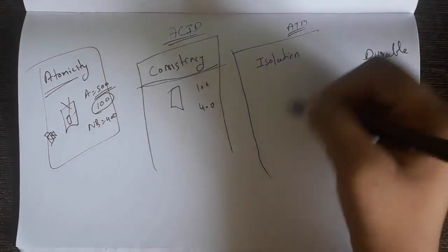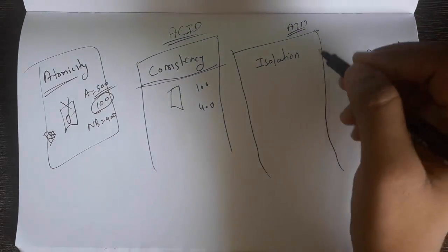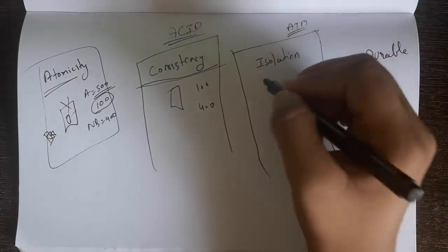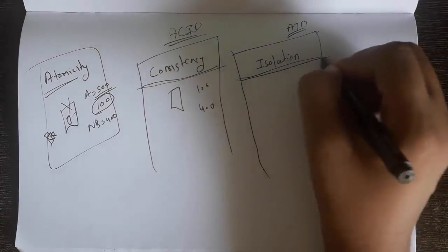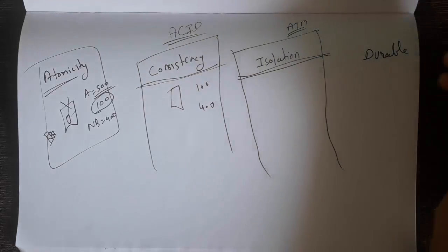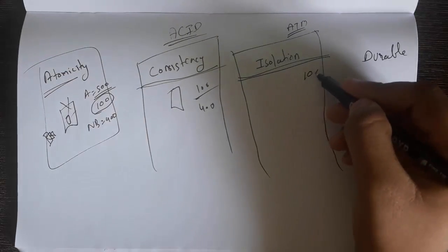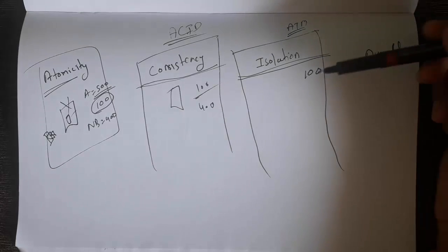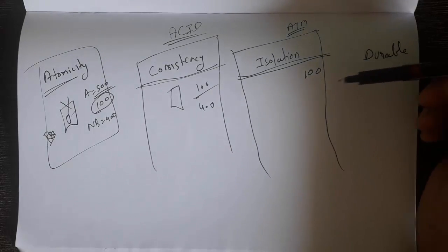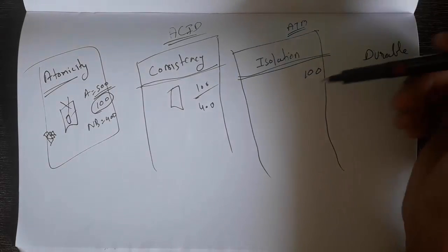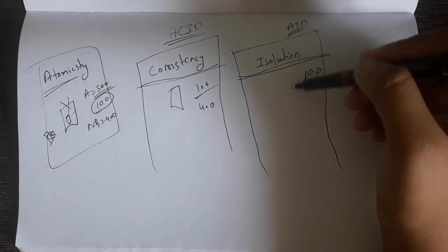What is isolation? Isolation means, as the name suggests, that the transaction which you have done, for example, after doing a transaction in the ATM we get a slip. Suppose I have withdrawn 100 rupees, so only I should know that I have withdrawn the 100 rupees, not every other person who comes to the ATM should have this written on their slip.